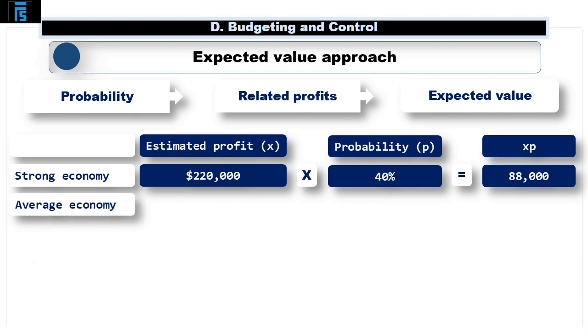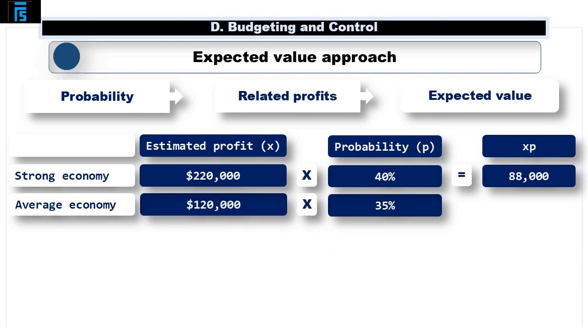In an average economy, there's a 35% chance, p, of an estimated profit of 120,000, x. X multiplied by p equals 42,000.